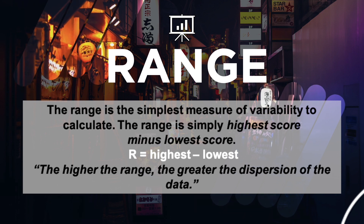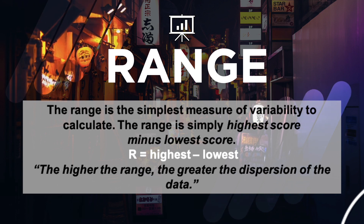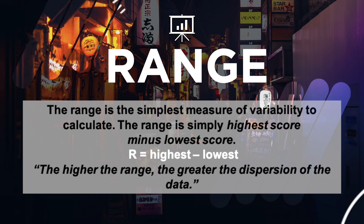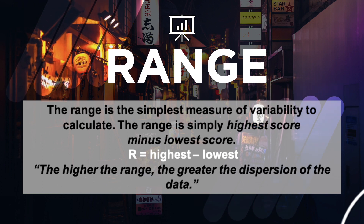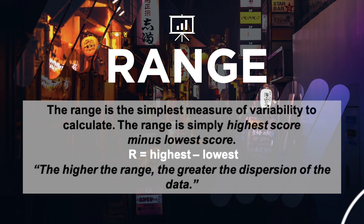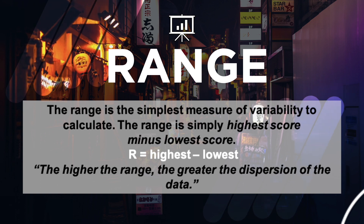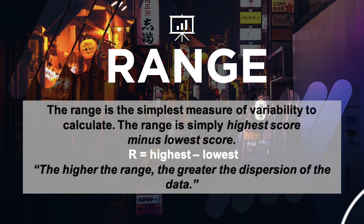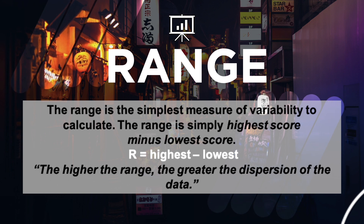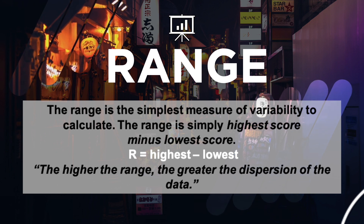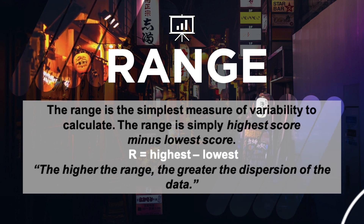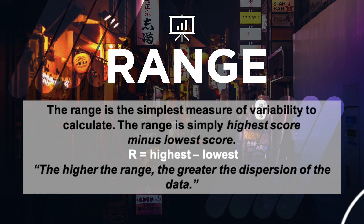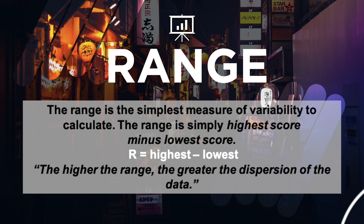The range is the simplest measure of variability to calculate, and one you have probably encountered many times. The range is identified by simply getting the difference of the highest score minus the lowest score. The formula is highest minus lowest. The higher the range, the greater the dispersion of the data.